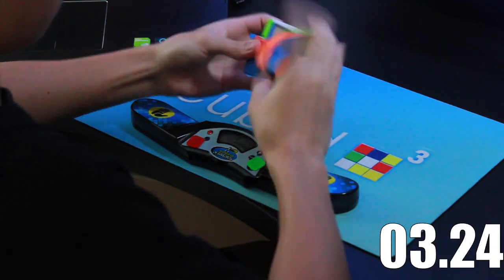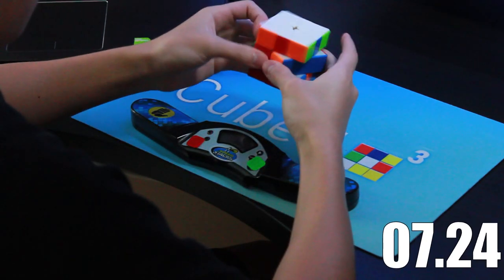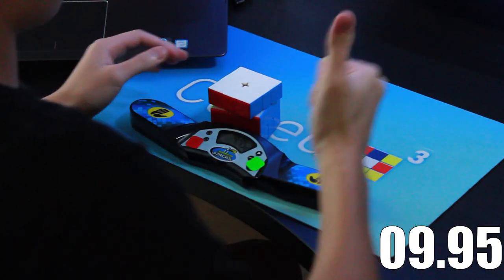Most people know that square one is a very ALG based event, meaning in order to improve, you most likely will need to learn a fair amount of algorithms. This means that this event is much less intuitive than many others.